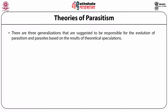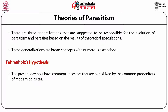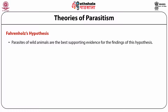Theories of Parasitism. There are three generalizations suggested to be responsible for the evolution of parasitism and parasites, based on theoretical speculations. These generalizations are broad concepts with numerous exceptions. 1. Farenholz's hypothesis: the present-day hosts have common ancestors that were parasitized by the common progenitors of modern parasites. Thus, this hypothesis can be employed to seek clues about the degree of relationship between parentages of modern hosts and modern parasites. Parasites of wild animals are the best supporting evidence for this hypothesis.